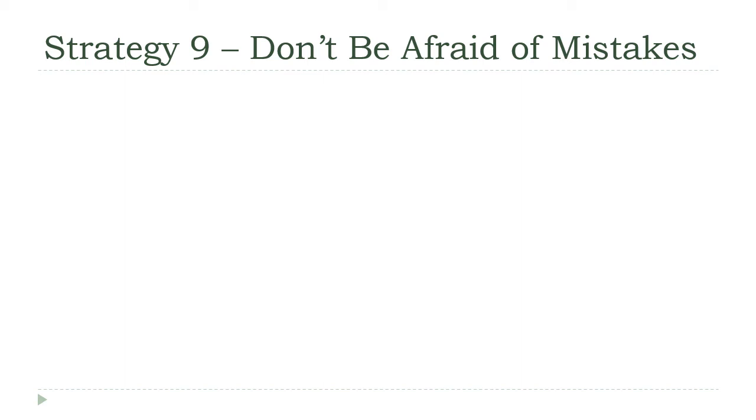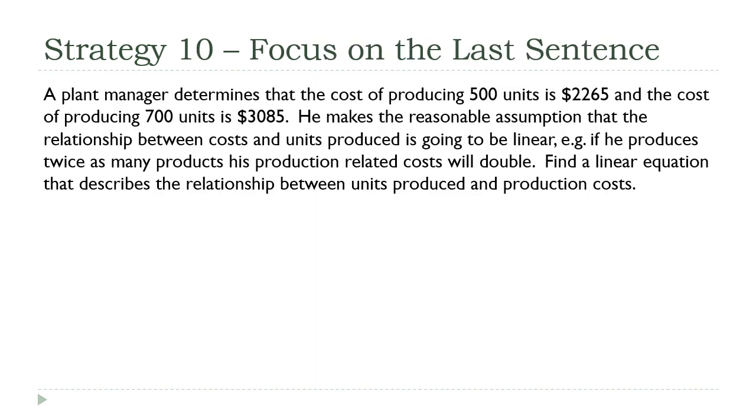This brings us to our last one. When you're faced with a word problem—this one is big, quite a bit going on here—focus on the last sentence. I know this goes contrary to what you're told in English classes, where they always say the first sentence is the most important, the topic sentence. In technical writing, it's often the reverse, especially in textbook situations like this. The most important sentence is often the last one because the last one is almost always the one that tells you what you want. You see that here: 'Find a linear equation.' Excellent! Now I know what my final answer is going to look like. When I'm all said and done here, I had better have a linear equation on the last line because that's what I'm looking for.